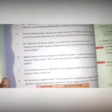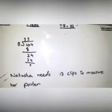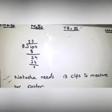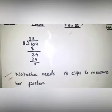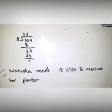Question number six: Rabia's poster is eight times longer than Natasha's poster. It takes 104 paper clips to measure Rabia's poster. How many clips would be needed to measure Natasha's poster? When you solve this, divide 104 by 8, and the answer is 13. So Natasha needs 13 paper clips to measure her poster.